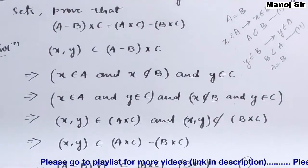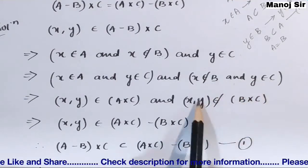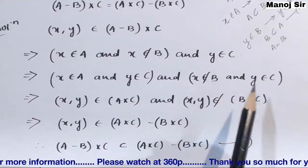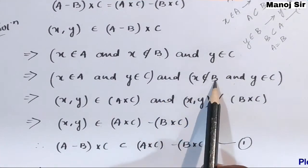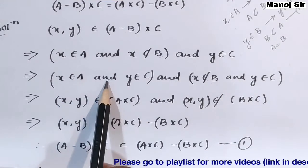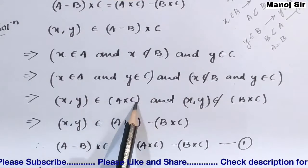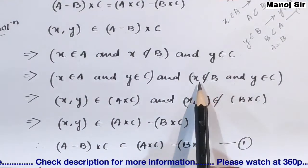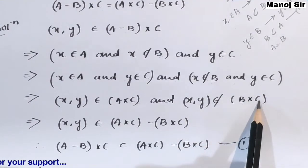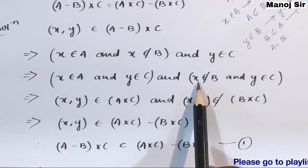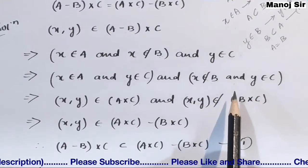Here there is a very important new rule to remember. When we have x belongs to A and y belongs to C, we write (x, y) belongs to A × C. And when we have x does not belong to B and y belongs to C, we write (x, y) does not belong to B × C. This rule — that 'does not belong' combined with a product gives 'does not belong to the product set' — is what you need to remember.